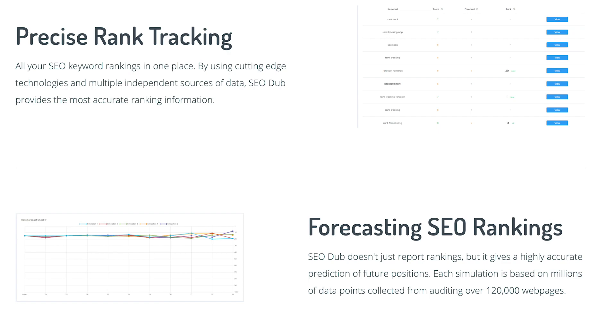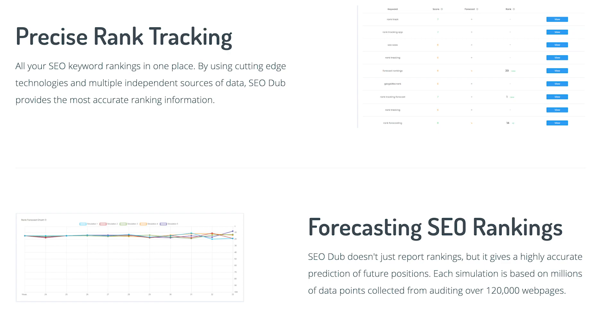The seventh tool on the list is called SEO Dub. You already know that there are a lot of SEO tools that track your website's rankings — for example, if you have a keyword, the tools would tell you where your website is ranking on Google's search results. But SEO Dub does something a little bit more. Not only will it tell you what your current rank is, it will also tell you what your future rank will be for your website. Try it out — the link is in the description.